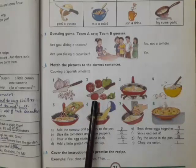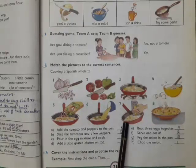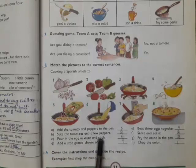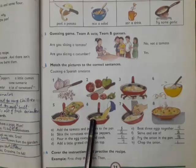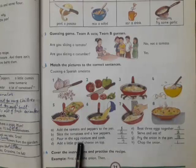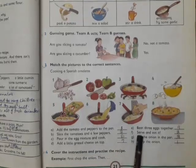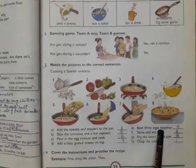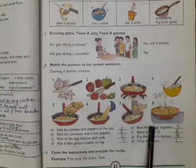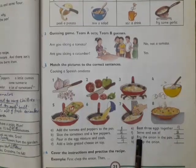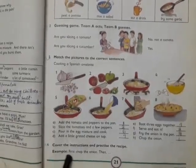Number one goes with chop the onion. In the second picture we can see some tomatoes, so it goes with slice the tomatoes and a few peppers. Next statement, pour the egg mixture into and cook. We can see that in picture six something is poured into the pan, so it goes with C. Add a little grated cheese on the top, it goes with picture B. Beat three eggs together, it goes with picture four. Serve and eat it goes with picture A. Fry onion in the pan goes with picture three.